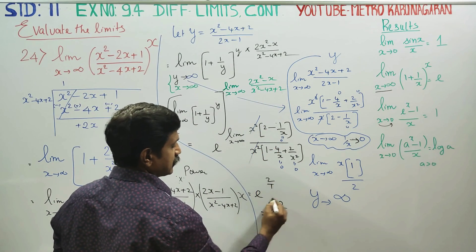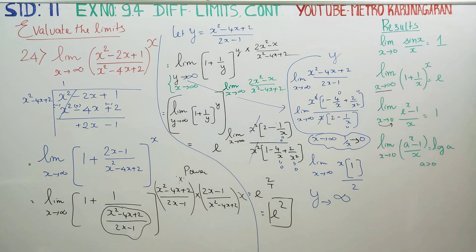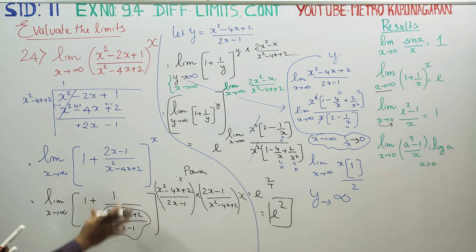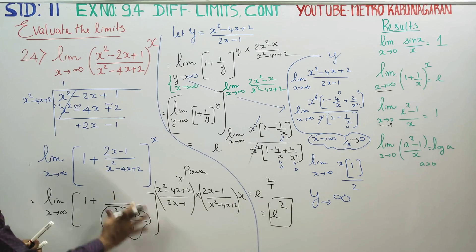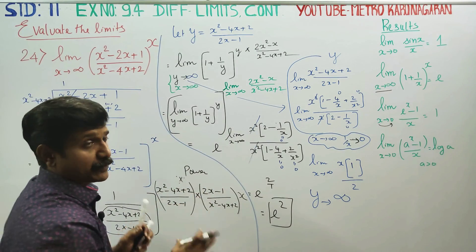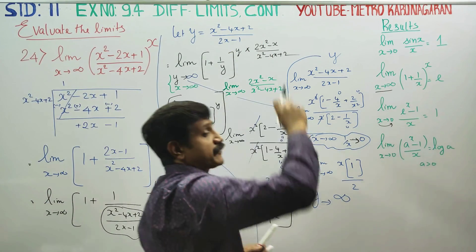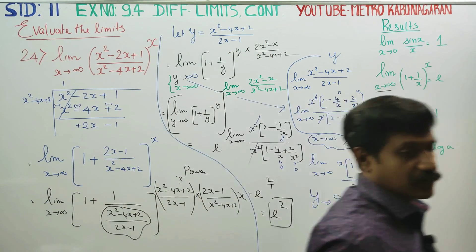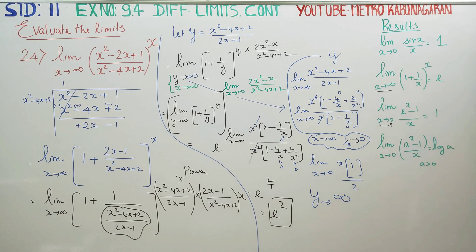Therefore your answer will be e². If you multiply the power and the limit, the two limits — y turns to infinity and x turns to infinity — work together. Therefore the answer is e². Thank you.